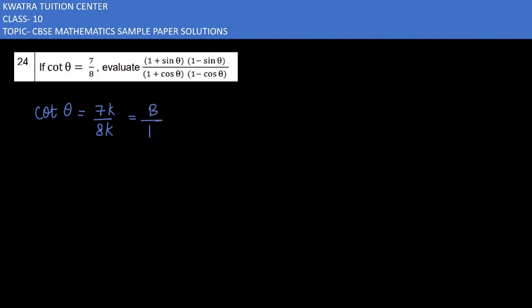First create a triangle because we need cos θ and sin θ to find this complete expression. Cot θ's value is 7k over 8k. So θ will be here, the base will be 7k, and the perpendicular will be 8k.